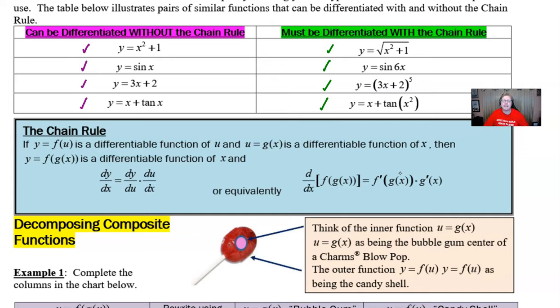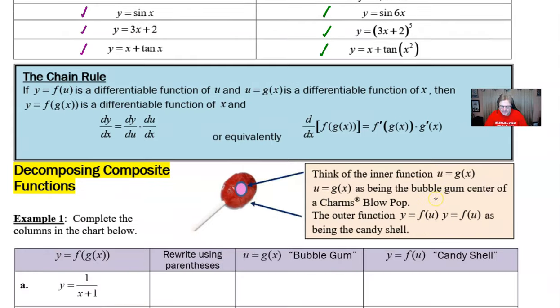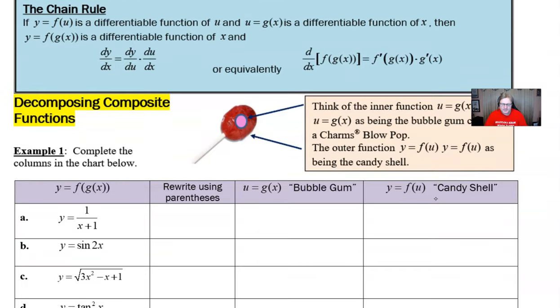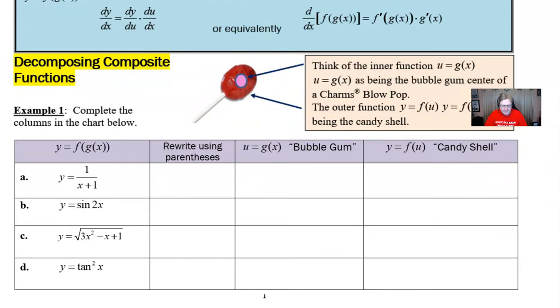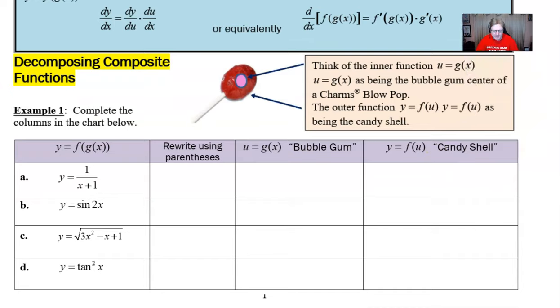So I'm going to do that with our first example, and hopefully this will make a bit of sense to you. I'm going to move my camera up a little bit out of the way. So we're going to talk about decomposing composite functions, because that's what the Chain Rule is all about. We're dealing with a composite function. That's when you have a function planted inside of yet another function. And the way that I like to explain this to my students, it's like a Charms Blow Pop sucker.